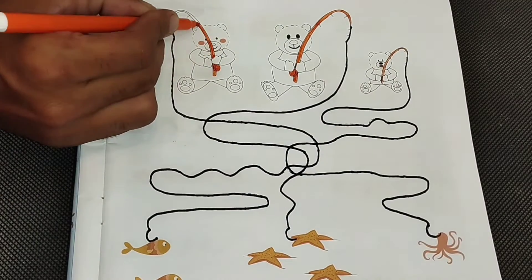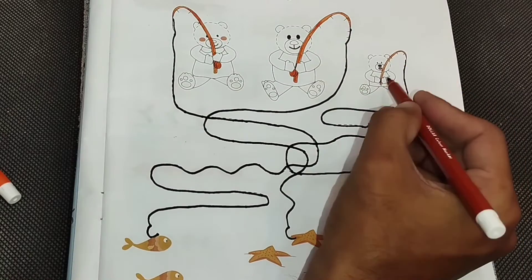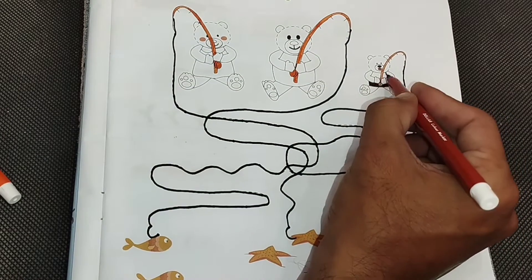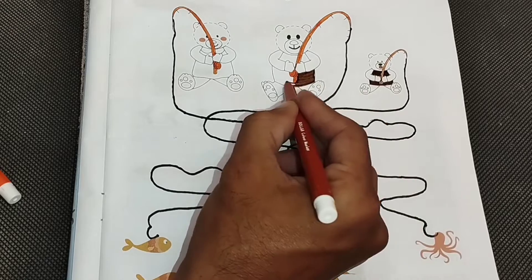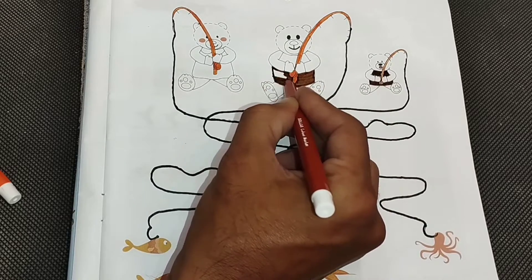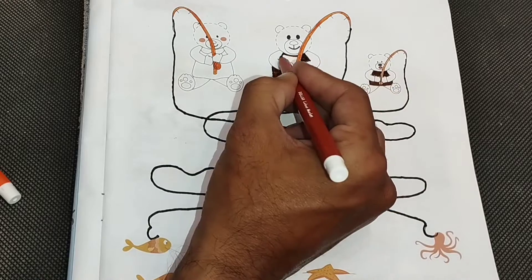E is for Elephant, E-E-Elephant. F is for Fish, F-F-Fish. G is for Gorilla, G-G-Gorilla. H is for Hat, H-H-Hat.